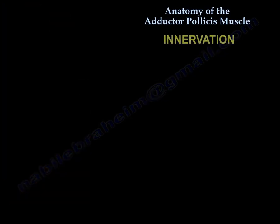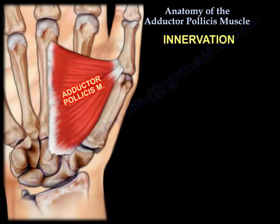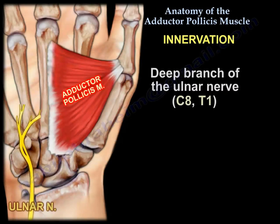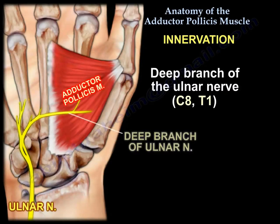Nerve supply: the deep branch of the ulnar nerve, C8-T1. When you lose the ulnar nerve, you lose all function of the adductor pollicis muscle.